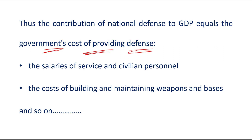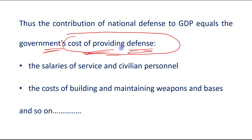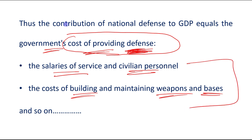Many government services don't pass through the market, which implies a lack of market values to calculate the government's contribution to GDP. The solution is to measure the value of that contribution by the cost of providing the service. For example, cost of providing defense includes salaries of service and civilian personnel, and cost of building and maintaining weapons and bases.